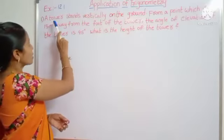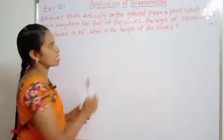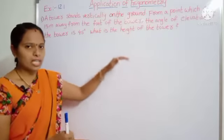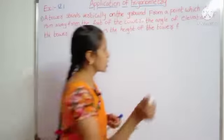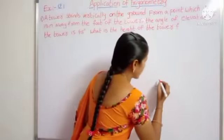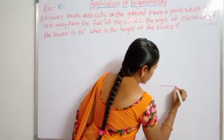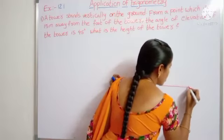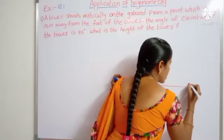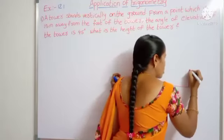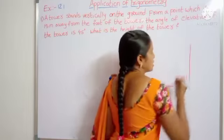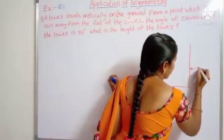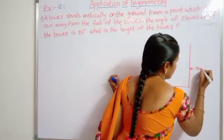Okay, partly given: a tower stands vertically on the ground. I am drawing a neat diagram. This is the ground, and based on this ground, a tower stands vertically. This is the tower.